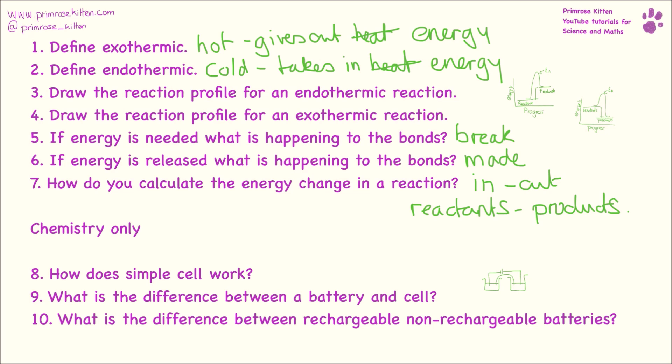What is the difference between a battery and a cell? A cell is just made up of one thing, whereas a battery is going to be multiple — two, three, four — all lined up together. That is linked with physics there.